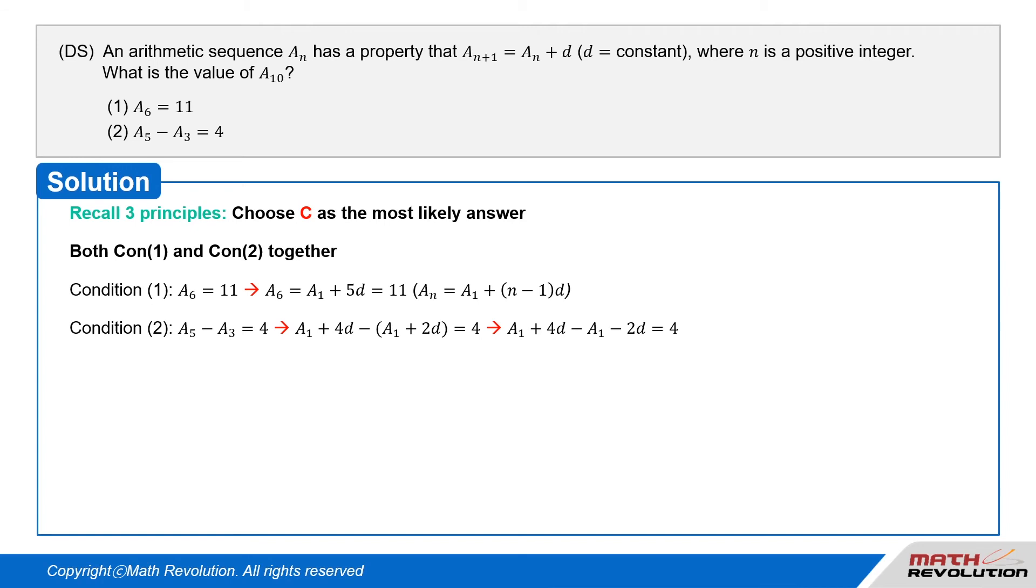a_1 + 4d - a_1 - 2d = 4. So we cancel out a_1. Then we get 4d - 2d = 4, so 2d = 4, or d = 2.